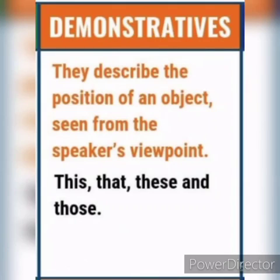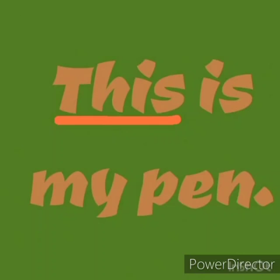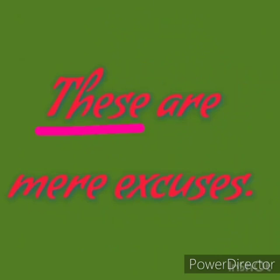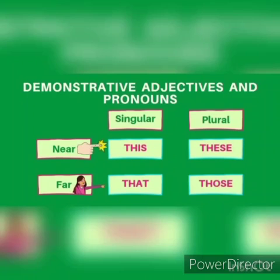The next category of determiners is demonstratives. 'This', 'that', 'these', and 'those' are called demonstratives. They can be used both as adjectives and as pronouns. They point towards something or someone and answer the question 'which one?' For example: 'This is my pen.' 'This pen is mine.' 'These are mere excuses.' 'Those are my dresses.' 'This' and 'these' refer to persons or things near the speaker.